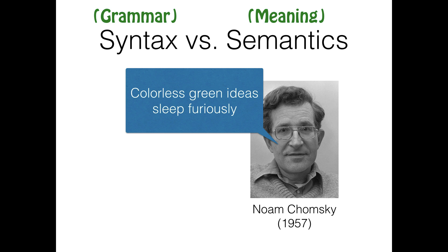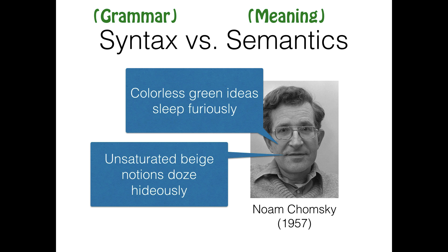Chomsky said: 'Colorless green ideas sleep furiously.' You've probably never heard this sentence before, and no individual pair of words in the sentence makes any sense. Something that's colorless can't be green, ideas can't be green, ideas don't know how to sleep, and you can't really sleep furiously. But we still know this is an English sentence even without knowing the meaning. And if you've heard that sentence before because it's now a famous linguistic example, we can make up a new one — like 'unsaturated beige notions doze hideously,' and so on.